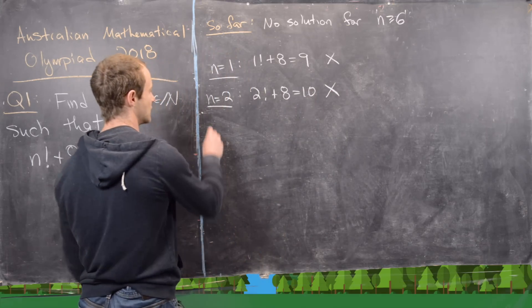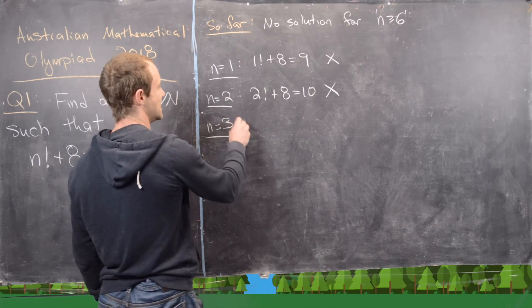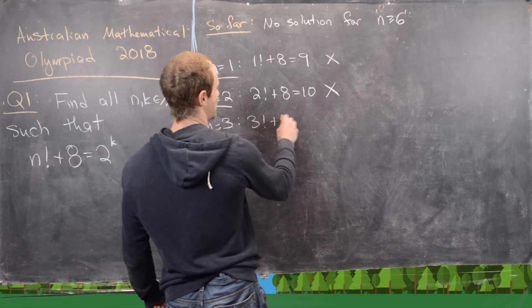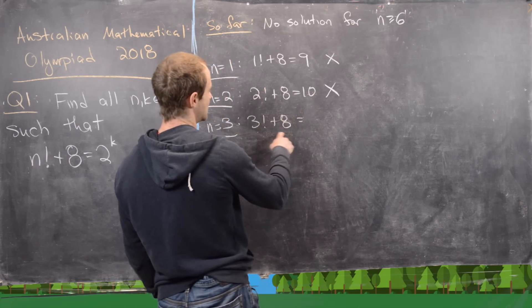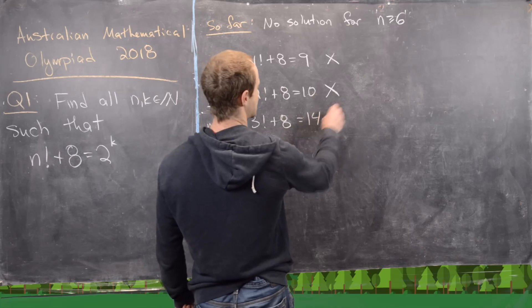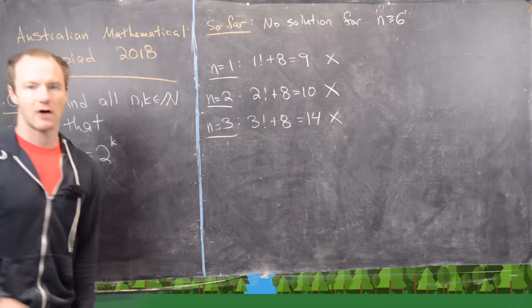Again, that's not a power of 2. n equals 3. We have 3 factorial plus 8. That's 6 plus 8, which is 14. Again, not a power of 2.